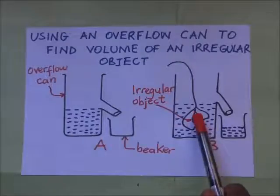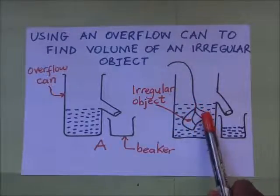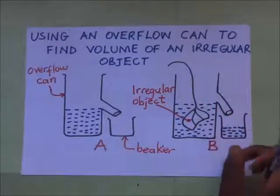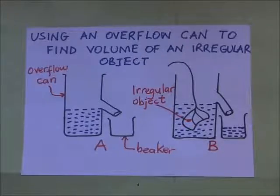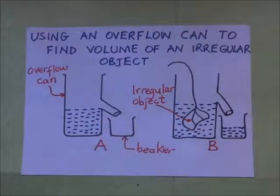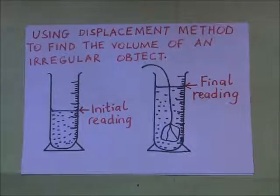After the irregular object has been fully immersed in the overflow can and all the displaced water has flowed into the beaker, we collect that water, pour it into a measuring cylinder, and measure it. From that reading we are able to determine the volume of the irregular object. We can also measure using the displacement method.